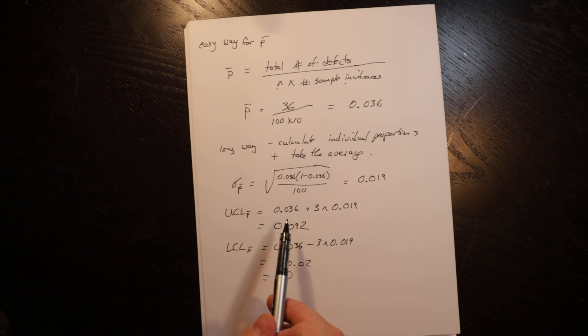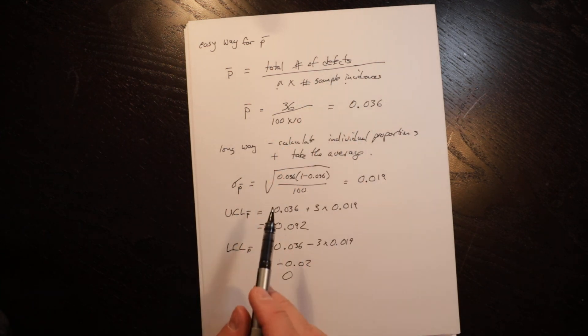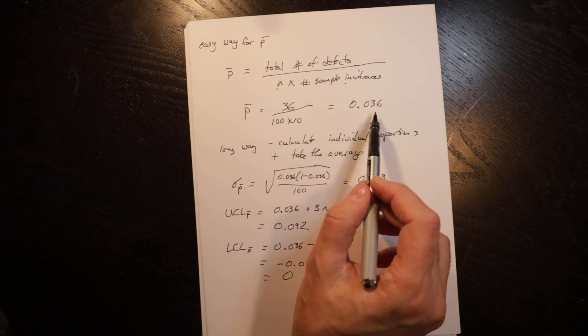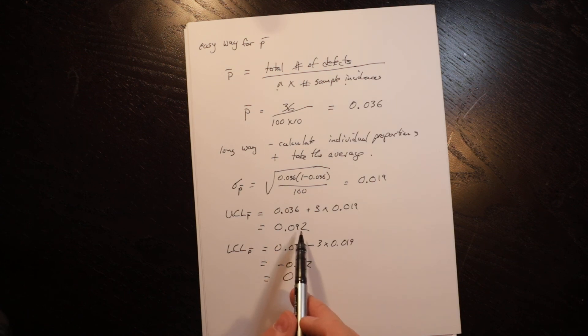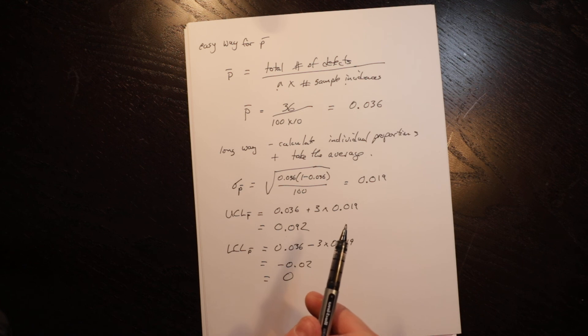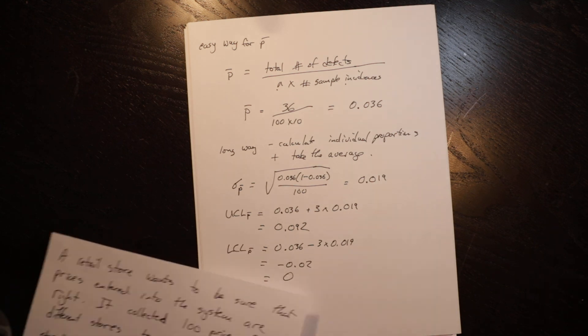Sometimes you might do defects, but we could have just as easily done the proportion that were correct, which would be 0.964. And then rather than being below zero, we would have had this above one. And similarly, the upper control limit can't be above one because you can't have a proportion that is greater than one. So those are two little things that you need to watch out for.